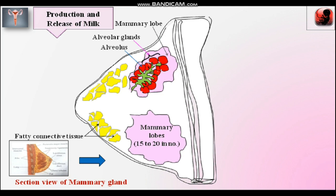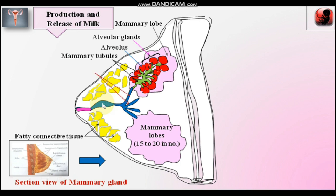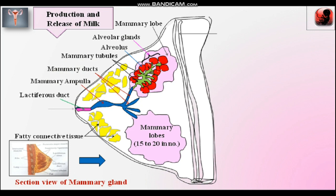From each alveolus arises a duct known as a mammary duct. These form mammary tubules. All mammary tubules join together to form a wider part known as the mammary ampulla. The mammary ducts of each mammary lobe join together to form the mammary ampulla. The mammary ampulla further leads into the lactiferous duct, which projects outside through the middle opening of the mammary gland — that is the nipple. The nipple is surrounded by a circular dark brown colored area known as the areola.